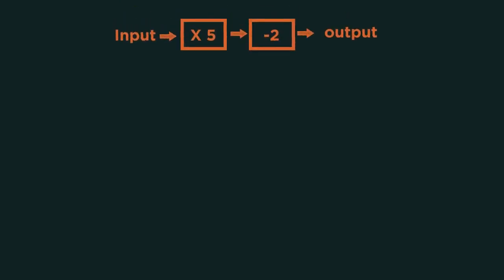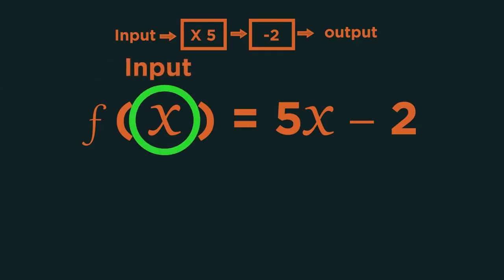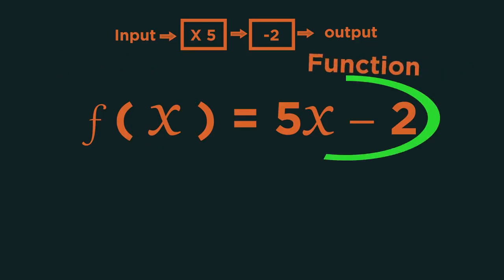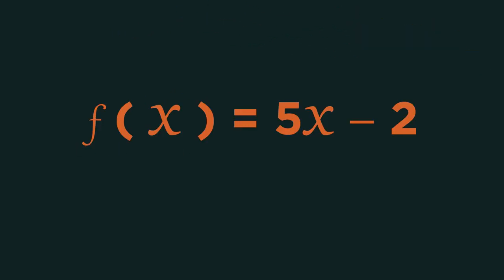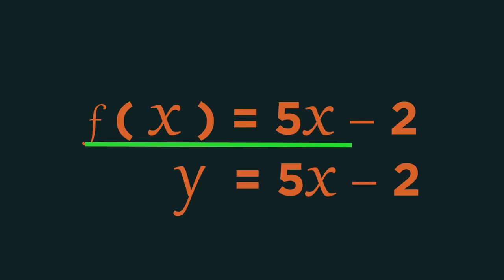Mathematically we'd write this function as f of x equals 5x minus 2. Where x is our input and what f of x equals is our function. We say a function of x equals 5x minus 2.